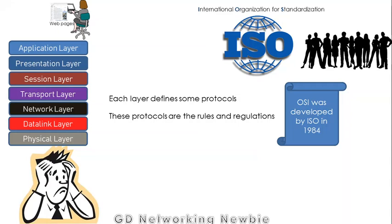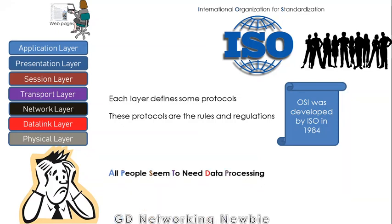Sometimes it becomes challenging to remember all the layer names. A solution for that is a mnemonic sentence: 'All People Seem To Need Data Processing.' The first letter of each word represents the name of a layer — for example, 'A' is for the application layer. You can use this sentence to remember the names of all seven layers.